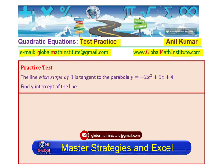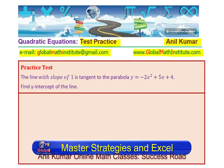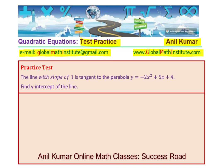Let us first understand what the question means and how do we solve it. A line with slope of 1 is tangent to this parabola and we need to find the y-intercept of the line. So let the y-intercept be k. In that case, the equation of the line will be y equals x plus k. So x plus k is tangent.